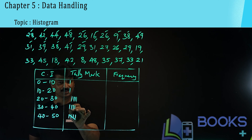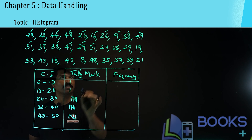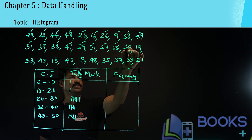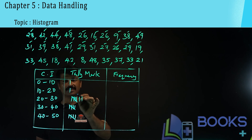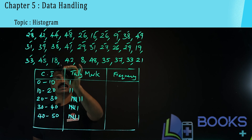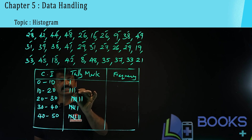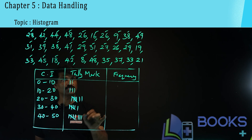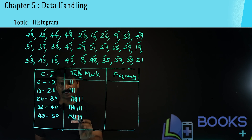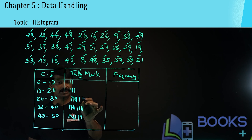27 goes into 20 to 30, and here you also make a cross. Then 26 comes here, 29 comes here. 19 goes into 10 to 20. 33 goes into 30 to 40. 45 goes into 40 to 50. 18 goes into 10 to 20. 42 goes into 40 to 50. 8 goes into 0 to 10. 48 goes into 40 to 50. 35 and 37 go into 30 to 40. 33 goes into 30 to 40. 21 comes into 20 to 30.